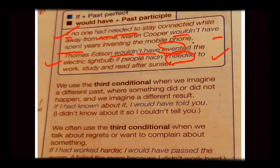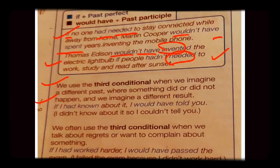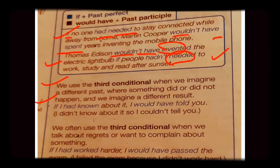Now, the function of third conditional — where do we use it? Third conditional is used when we imagine a different past, where something did or didn't happen the way we imagined. We are talking about a different result. For example: 'If I had known about it, I would have told you.' I was totally unaware of the fact. Things happened but not according to our expectations — it is an imaginary situation.